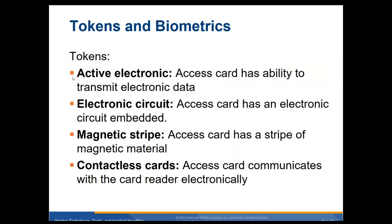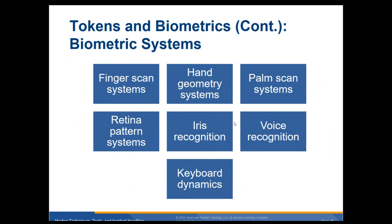Tokens and biometrics: active electronics — an access card has the ability to transmit electronic data. An electronic circuit access card has an electronic circuit embedded, like your little chip. Magnetic strip — access card has a strip of magnetic material. Contactless card communicates with the reader electronically — that's how my badge allows me to get into the classrooms. Biometrics include fingerprint, hand geometry, palm scanner, retina scan, iris recognition — retina and iris are with the eye. Voice recognition when you're talking, and keyboard dynamics, which is interesting because everybody has their own way of typing — how fast they type, called flight time, and dwell time, which is how long your fingers stay on the keys. That can be recorded to determine who's been on the keyboard.